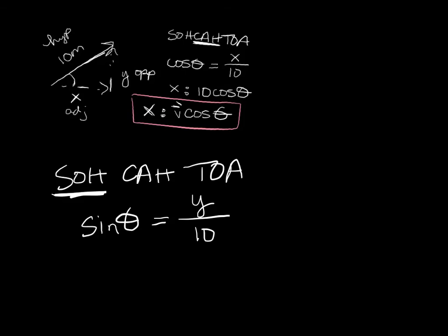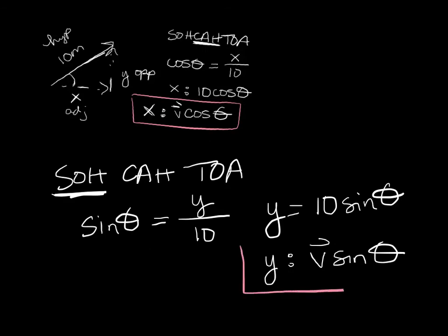So if we rearrange this and solve for y, we get y equals 10 sine theta. And in physics, what we're going to find is that our y components of a vector are always going to be the vector times the sine of the angle. Those are two of the really important things to remember. So your x component uses cosine. Your y component uses sine.